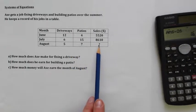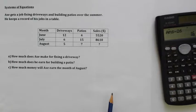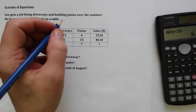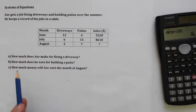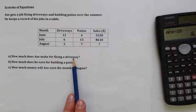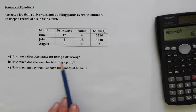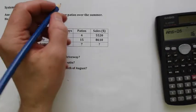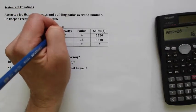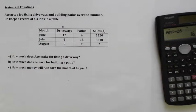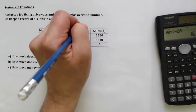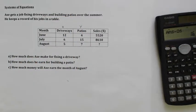Now, the problem is we don't have any equations here. But we do know that a driveway is an unknown amount. How much does Axe make for fixing a driveway? How much does he earn for building a patio? Those are unknown amounts. In other words, these are X's over here. The amount that he makes for a driveway is unknown and the amount that he makes for a patio is unknown. We call the first one X and the second one Y.